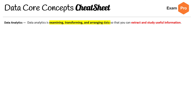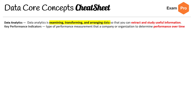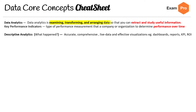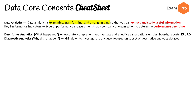On the last page — data analytics is examining, transforming, and arranging data to extract and study useful information. Key performance indicators (KPIs) are performance measurements a company uses to determine performance over time. Types of analytics include: descriptive analytics (what happened — uses accurate, comprehensive live data and effective visualization like dashboards, reports, KPIs, ROI); diagnostic analytics (why did it happen — drills down to investigate root cause, sometimes called root cause analysis, and is a subset of descriptive analytics); predictive analytics (what will happen — uses historical data with statistics and ML to generate trends or predictions).